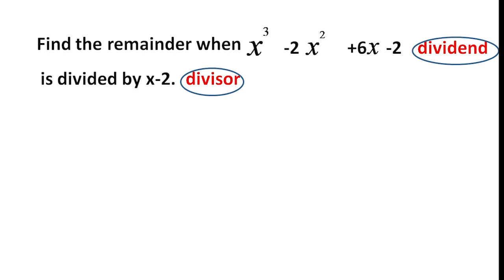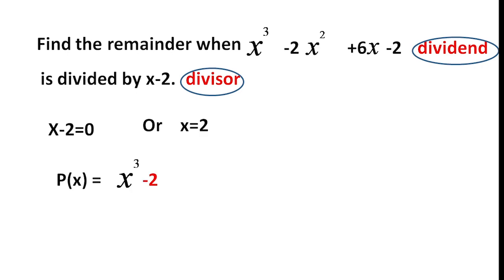Since it is linear, it has only one zero to find. We set x minus 2 equal to 0. We substitute the divisor equal to 0, which means x is equal to 2. Then we substitute that value of x, which is 2, into P of x.